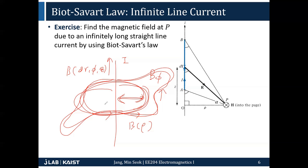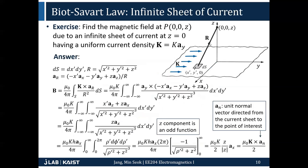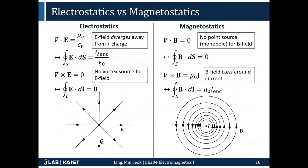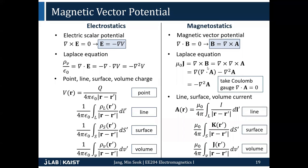A student asks why we can set divergence of A equal to zero. The choice of divergence of A does not affect the B field — no matter what function you choose for divergence of A, taking the curl of A gives the same B. This is gauge freedom, analogous to adding a constant to electric potential V. We choose divergence of A = 0 (Coulomb gauge) because it is mathematically convenient: it reduces the governing equation to the Laplace/Poisson form. Next week I'll explain this in more detail.